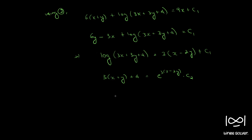The answer given is x plus y plus 4 by 3 equal to e raised to 3 times x minus 2y, where c2 by 3 is another constant c3. We divided throughout by 3, and c2 by 3 is called c3, another constant. This is the solution to question number 99.